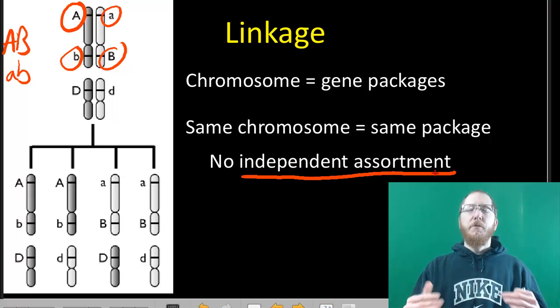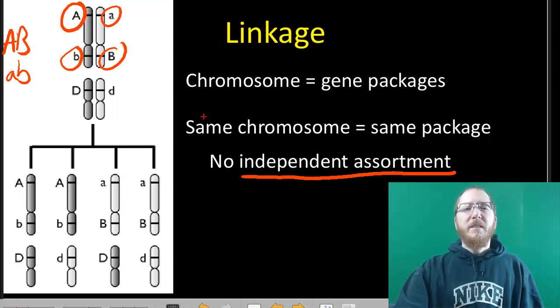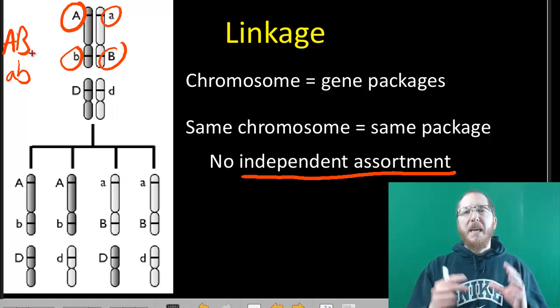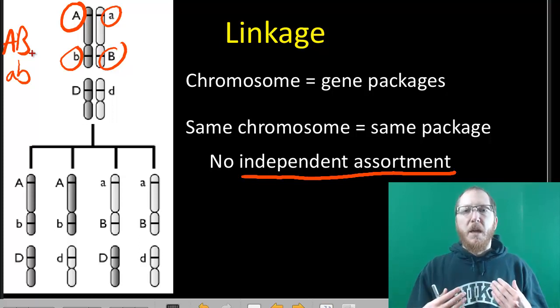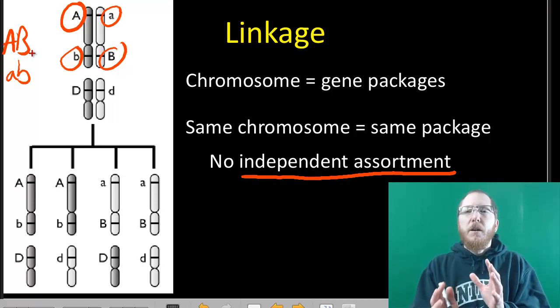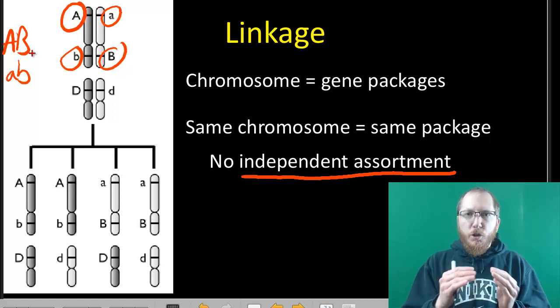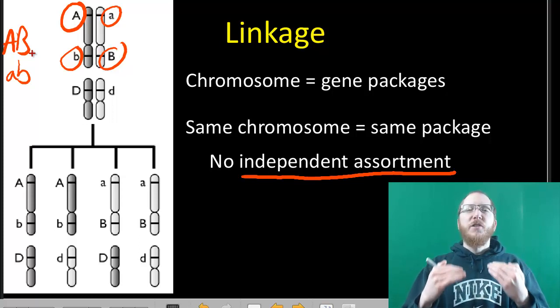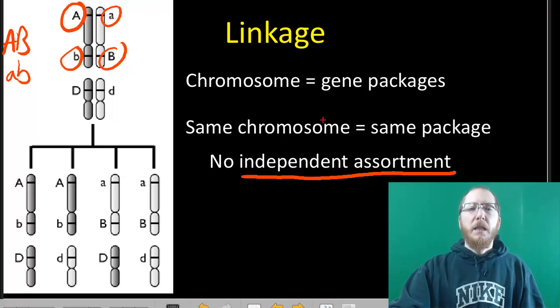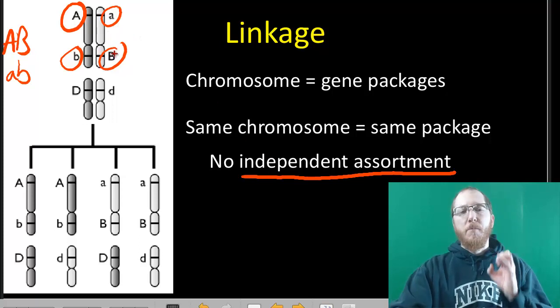So Mendel didn't really see this because he didn't really study traits that were on the same chromosome. But we now have done this so we realize when we see the two particular combinations, so it would be like saying tall with dark hair, short with light hair. If we almost never see the reverses, if we almost never see tall with light hair or short with dark hair, that's almost a surefire sign that linkage is going on, and so some of these alleles are being packaged together because their genes are on the same chromosome.